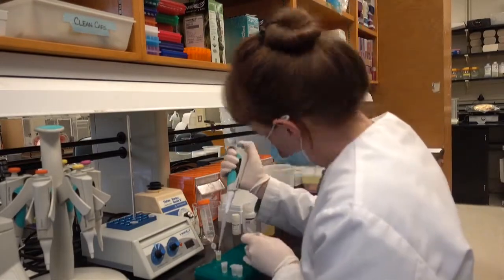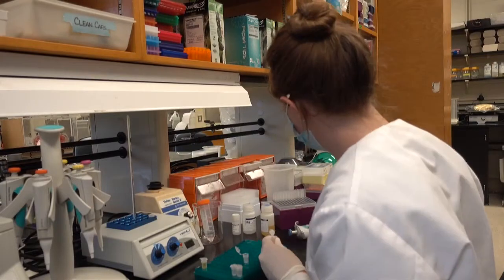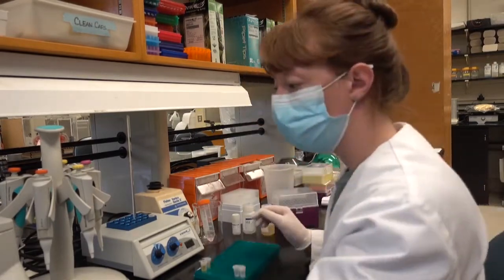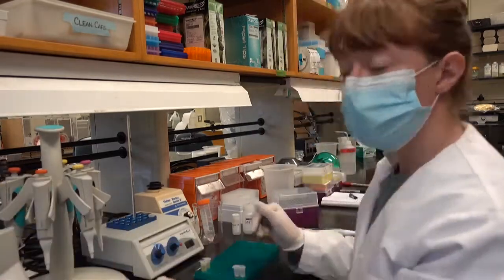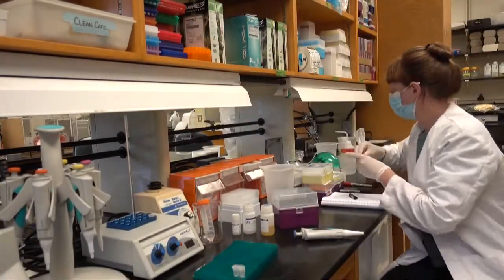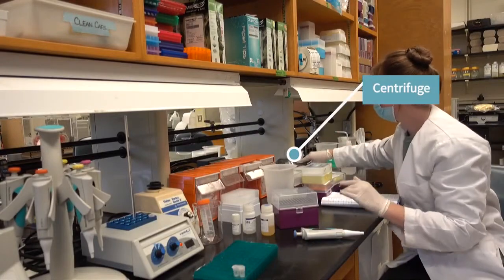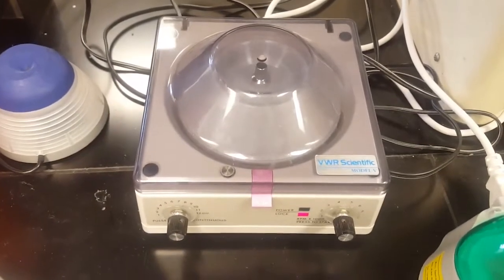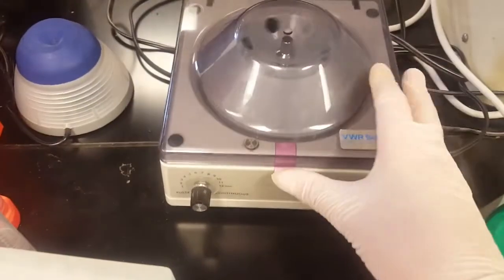I'm adding my sample to a new tube that contains a filter in the center, and the DNA binds to this filter, which allows us to wash all the contaminants away from the DNA. And to do this, we use another machine called a centrifuge. So we can add the tubes into this machine, and it spins it very quickly, which pushes the liquid down into the bottom.